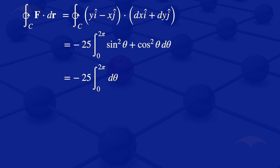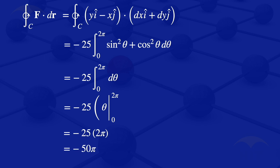When we integrate, we get minus 25 times theta evaluated from 0 to 2π. Putting in the limits gives 2π minus 0, which is 2π. So we have minus 25 times 2π, which gives minus 50π. Therefore, the integral along the closed curve C in the positive direction equals minus 50π.